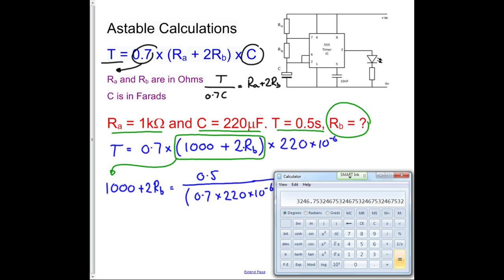So what I get here is I get 1,000 plus 2RB equals, and I'm only going to write down the first two significant figures here, 3,200 ohms. That's what this value has told me, my 3,200 ohms just there.